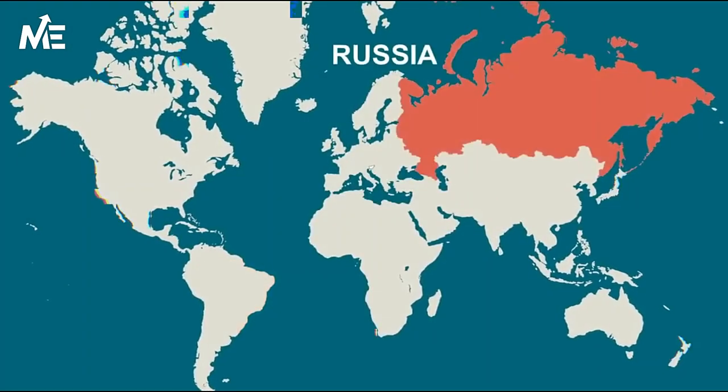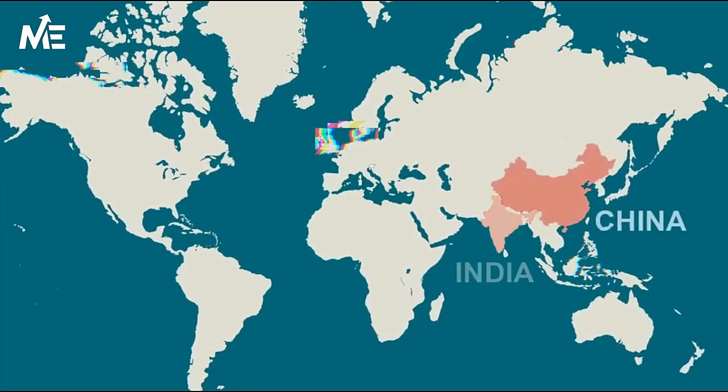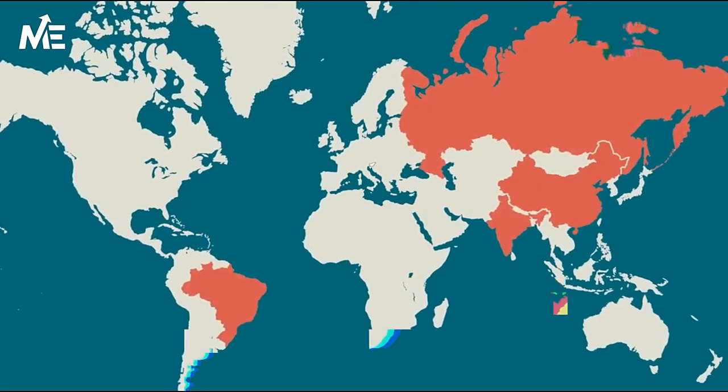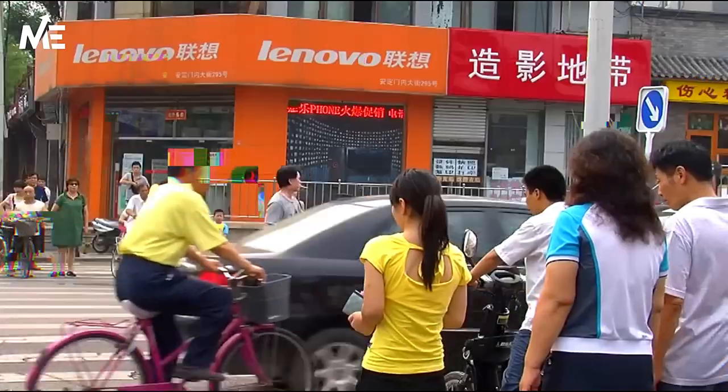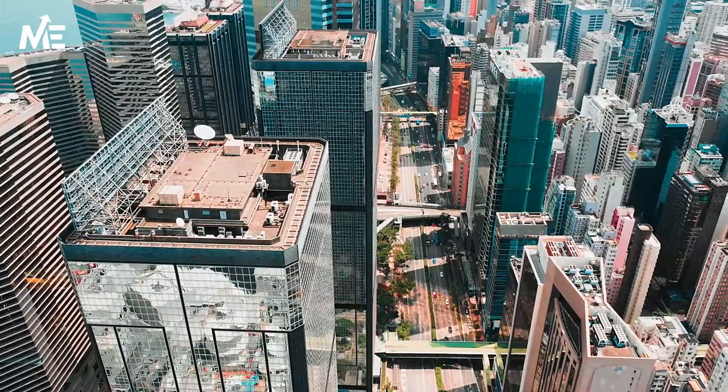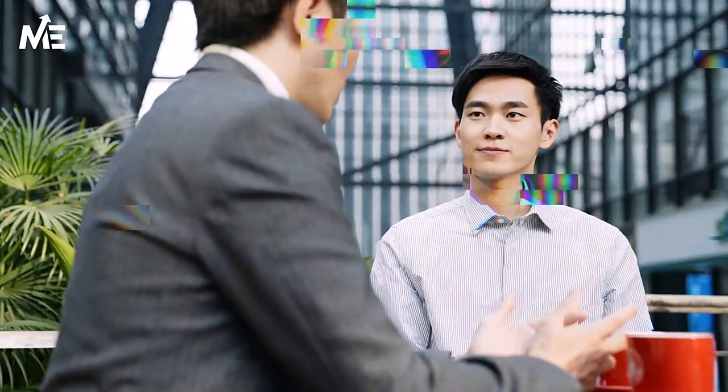Lastly, South Africa is the most developed economy on the African continent, with well-established infrastructure and a thriving tourism industry. The country is rich in natural resources, with significant mining operations in gold, platinum, and coal. Despite these strengths, South Africa faces ongoing challenges such as high unemployment, income inequality, and political instability. Investing in BRICS ETFs can provide exposure to a wider range of industries across these emerging markets, though inherent risks must be recognized.